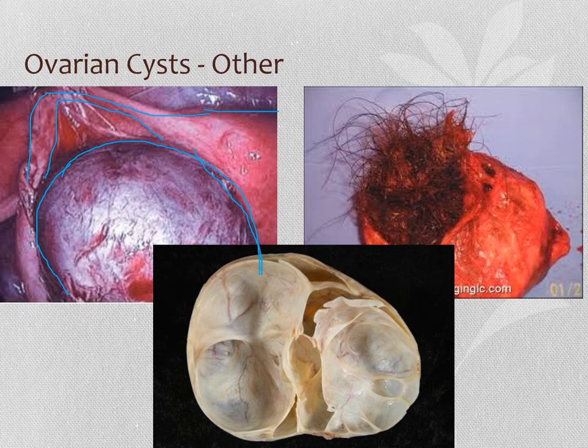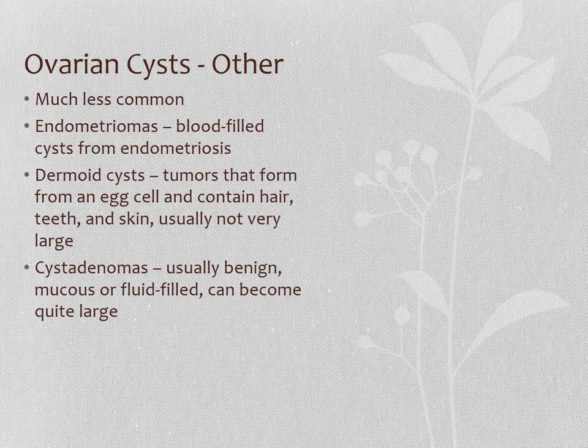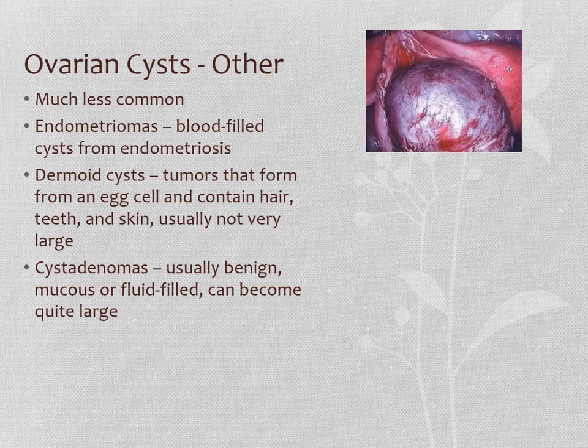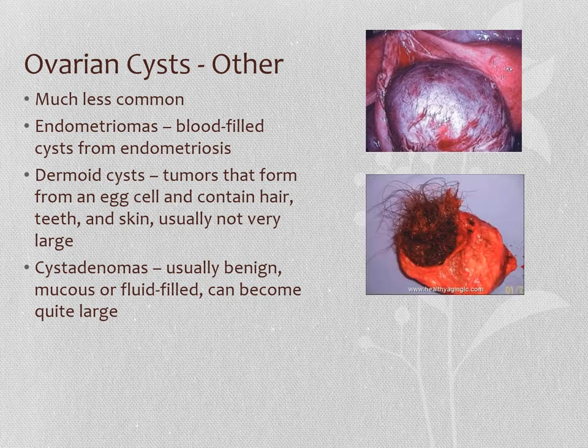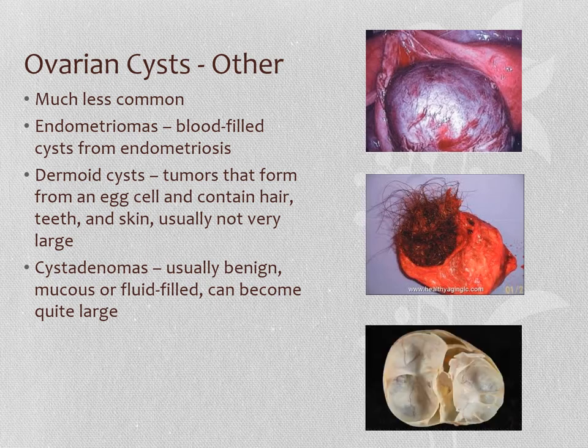And then finally, this one here is actually quite large — larger than a grapefruit, probably more the size of a watermelon. What we're looking at is the inside of a cyst that has been removed from someone, and it was filled with mucus. This is called a cyst adenoma. These cysts can become very large — sometimes almost as large as a pregnant uterus, so sometimes it can look like somebody's pregnant when in fact they just have this large cyst. The endometriomas are blood-filled from endometriosis; the dermoids contain skin, hair, and teeth; and the cyst adenomas are usually benign, mucus- or fluid-filled, and can be quite large.